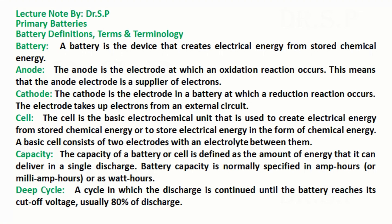Primary batteries: battery definitions, terms, and terminology. Battery: a battery is the device that creates electrical energy from stored chemical energy. Anode: the anode is the electrode at which an oxidation reaction occurs, meaning that the anode electrode is a supplier of electrons.